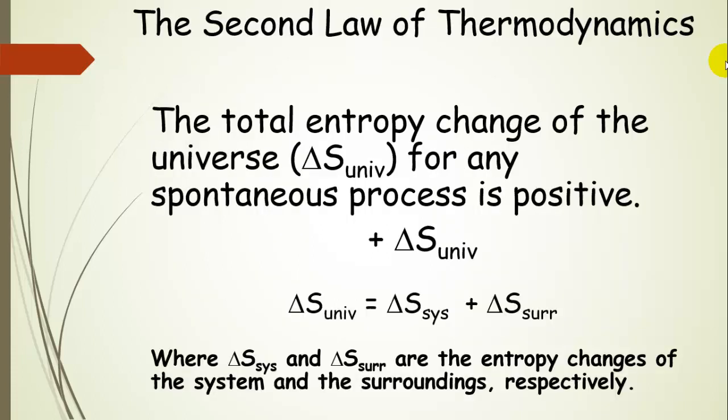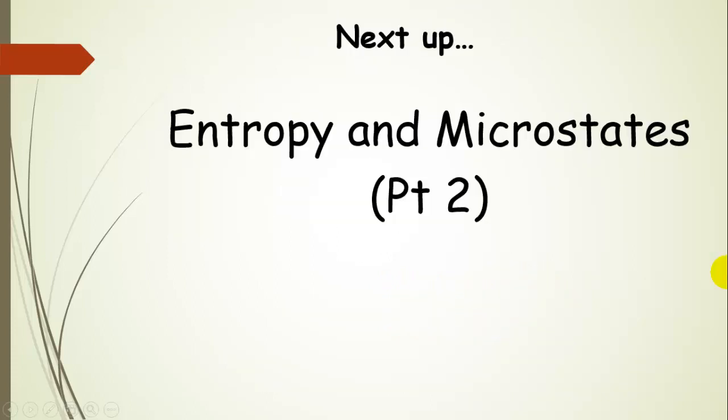Finally, the second law of thermodynamics: one way to express it is that the total entropy change of the universe for any spontaneous process is positive. In other words, entropy increases for a spontaneous process — delta S, the change in entropy, is positive for a spontaneous process. The change in entropy of the universe is the sum of the change in entropy of the system plus the surroundings. Next, we're going to talk about entropy and microstates.